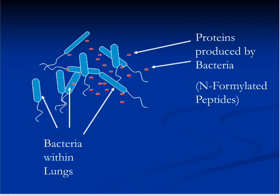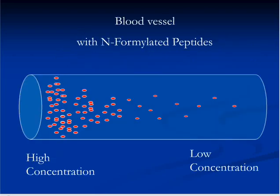In this slide, you are seeing some bacteria within the alveoli of the lungs. The red circles are N-formylated peptides, which are a type of protein. Humans cannot produce N-formylated peptides. They are produced by some bacteria, and if infected by these bacteria, these proteins enter into the human bloodstream. As these proteins move through the blood, their concentration decreases.